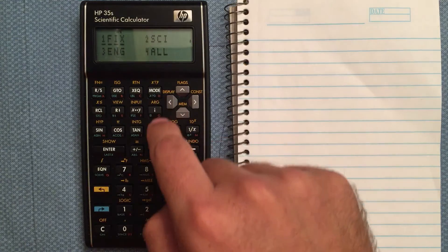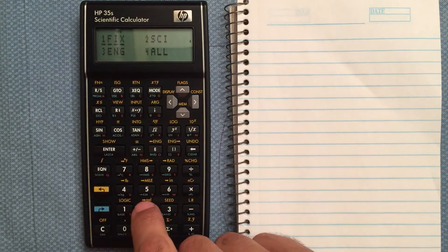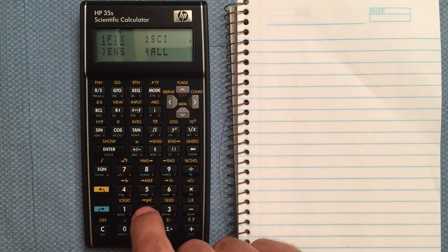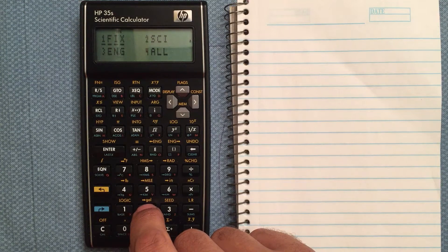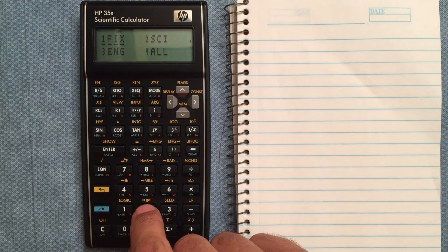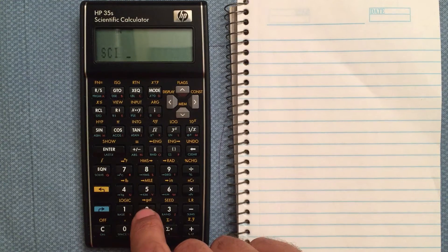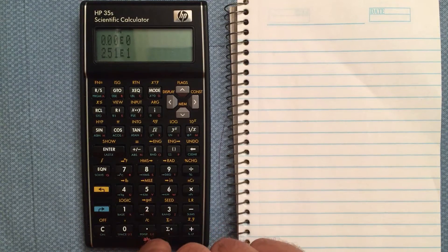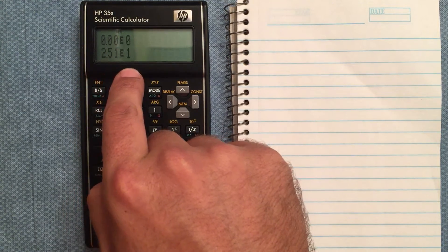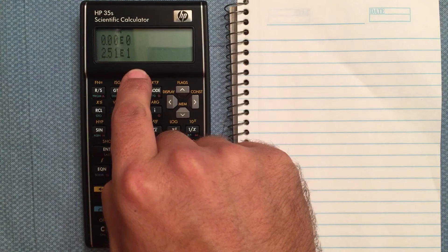Go back to display mode. Scientific. Scientific does the exponent, but it only does one digit before the 10 to the whatever number you pick. So scientific, let's say I want to display two decimal places there. It goes 2.51 times 10 to the 1 power.